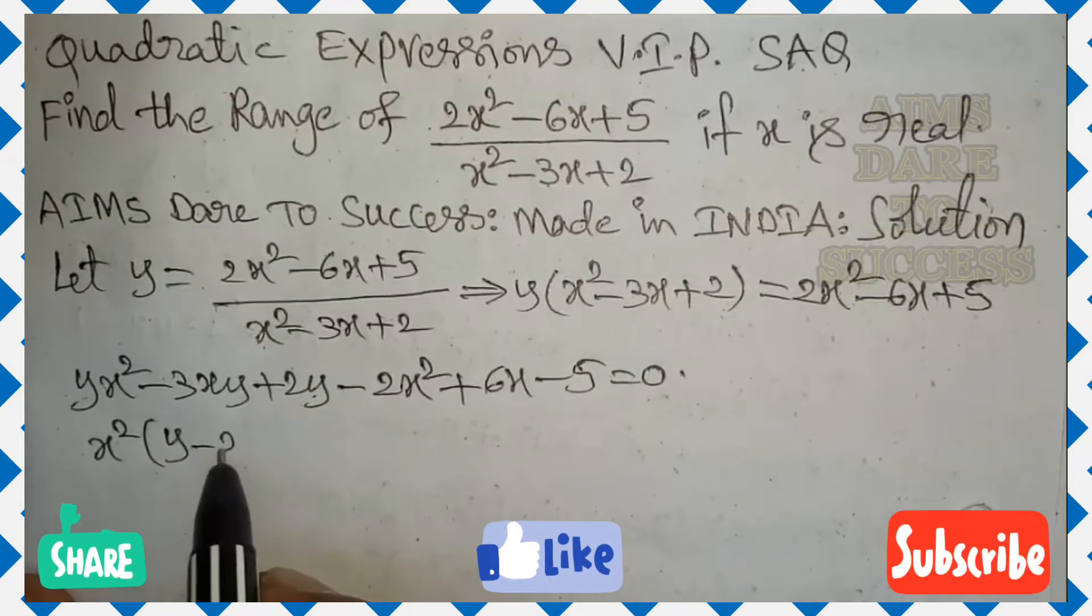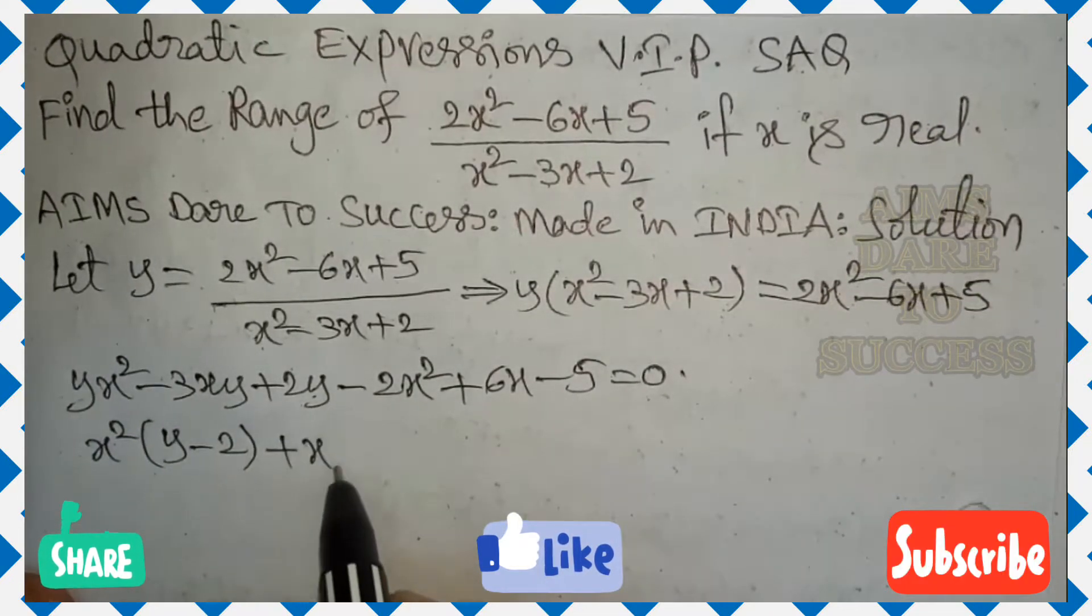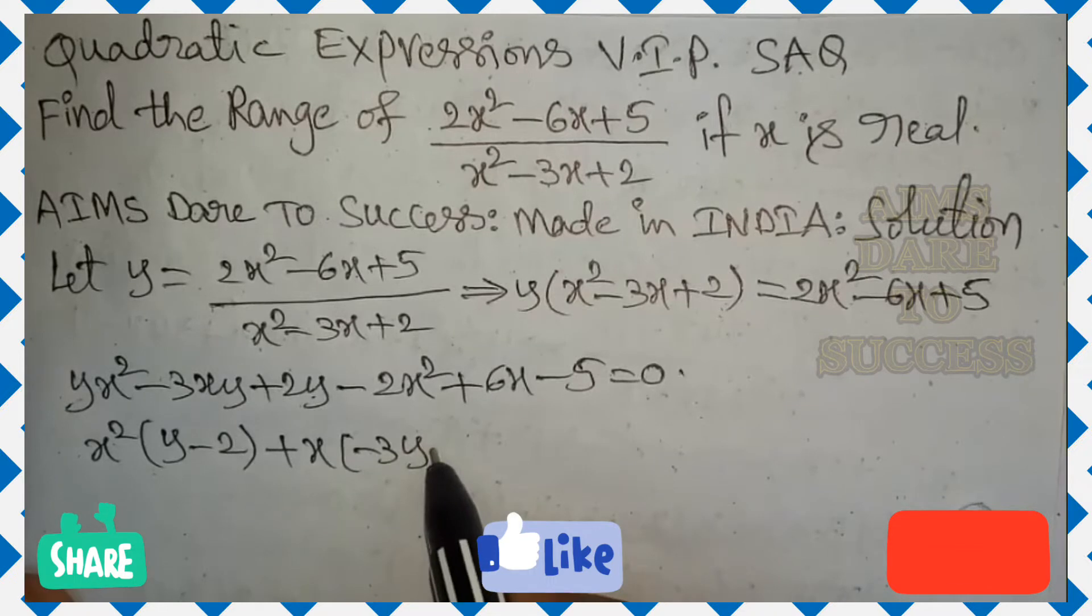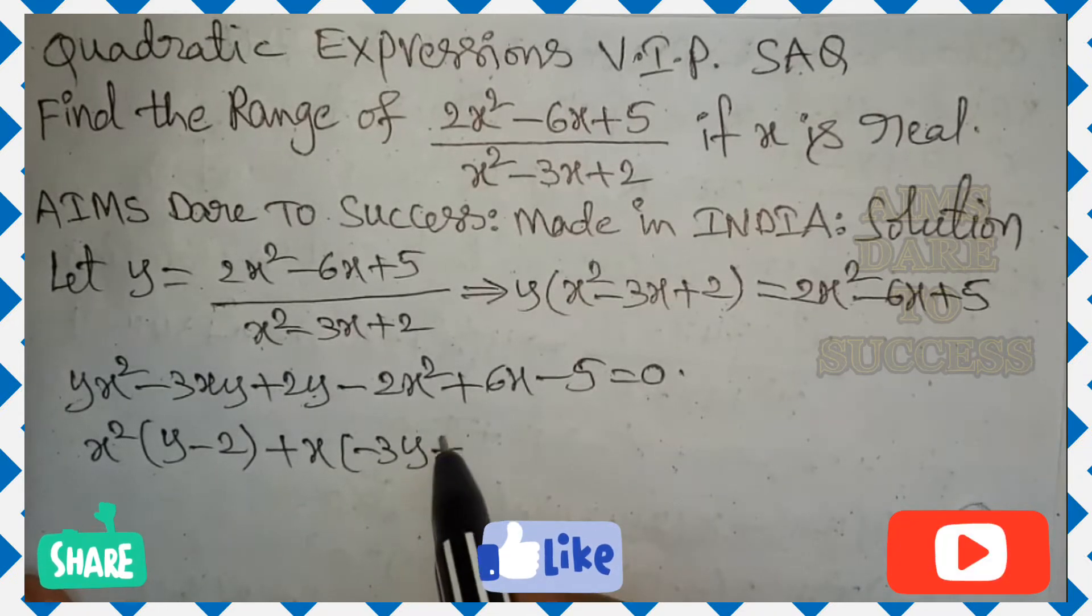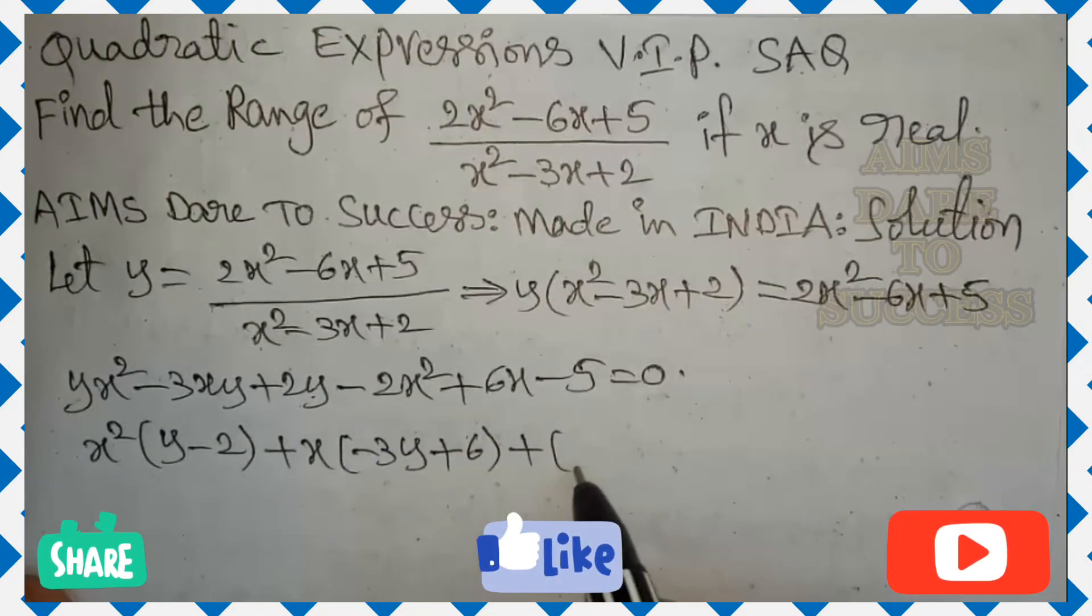x square common take y minus 2. Next, x common take minus 3y plus 6. After that remaining values,